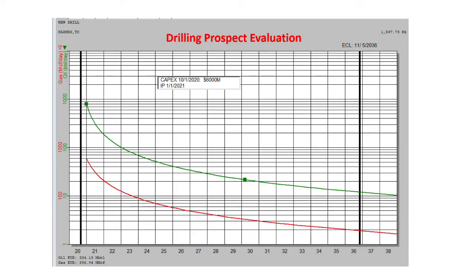Here's a typical drilling prospect evaluation. We want to evaluate this project. Here's a rate versus time graph with oil and gas — gas is green — and we have the estimated expected production from the well when we drill it. We're going to drill the well late this year at a cost of $6 million, and then it's going to have initial production on January 1st. You put all this into your software and add in the operating expenses, your ownership, your oil and gas prices, and use the software to generate a cash flow or reserve report for this drilling prospect.